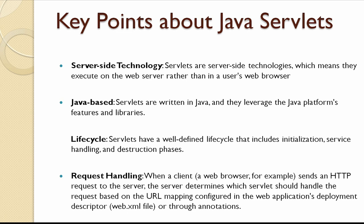When a web server like Apache Tomcat starts, it loads and initializes the servlets defined in the web application. Servlets have a well-defined lifecycle including methods like init, service, and destroy. The init method is called when the servlet is first created. The service method is called for each request — it's where the servlet processes the client request and generates the response. The destroy method is called when the servlet is being taken out of service, giving it a chance to clean up resources.